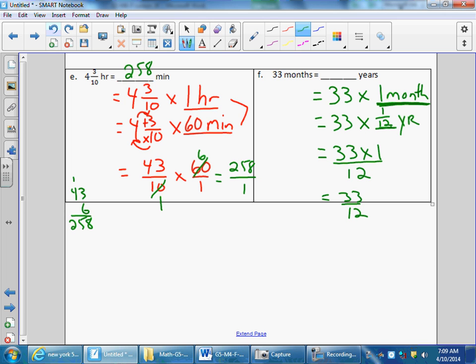And I'm going to have to do a little standard algorithm. Thirty-three divided by twelve to get two with nine-twelfths left over. Two and nine-twelfths simplifies by dividing top and bottom by three to two and three-fourths. Thirty-three months is two and three-fourths years.